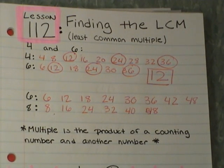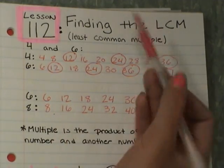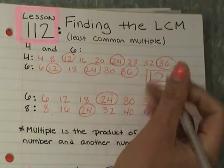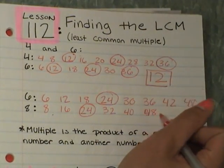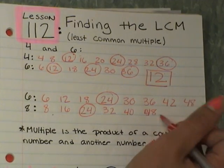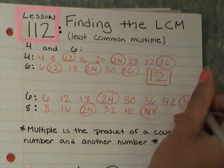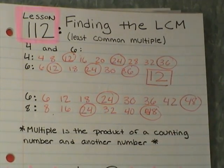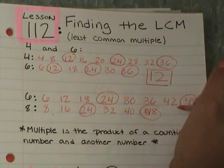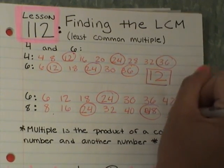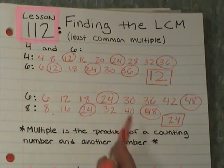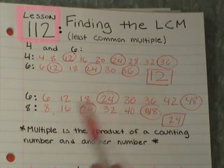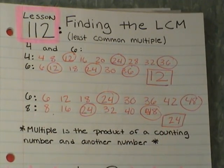Now I'm going to go through and circle the ones I have in common. I look — 24 for sure. Do I have any more in common? Yes, 48 at the end. And my smallest one is 24. This is my smallest common multiple that 6 and 8 have together — 24.